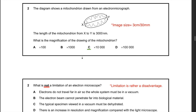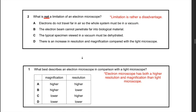Question 12: what is NOT a limitation of an electron microscope? The key word is 'not' — so it should be an advantage. Answers A, B, and C describe disadvantages of using an electron microscope. However, D states there is an increase in resolution and magnification compared with the light microscope — that is an advantage, so it is not a limitation. The answer is D.